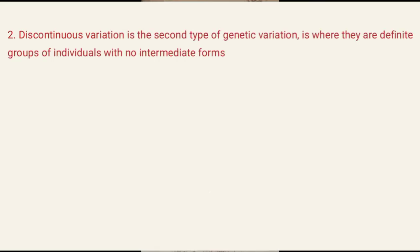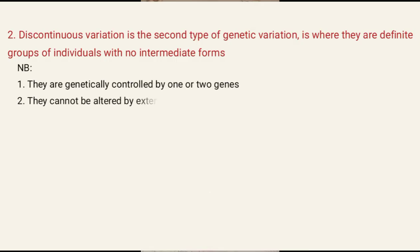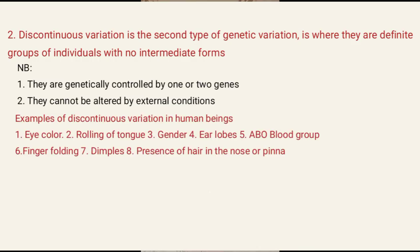From there, we have discontinuous variation. Discontinuous variation is where there are definite groups of individuals with no intermediate forms. NB, they are genetically controlled by one or two genes, and they cannot be altered by or are not affected by external conditions. Examples of discontinuous variation in human beings include: eye color, rolling of tongue, gender, ear loops, blood groups — that is ABO blood groups — finger folding, and dimples.